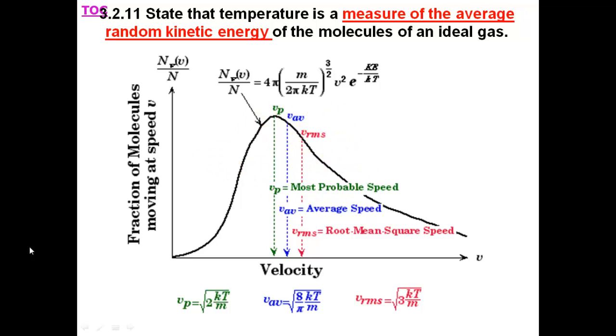So we know that the molecules have a range of kinetic energies. Some have a very high kinetic energy in this part of the graph. Some have a very low kinetic energy in this part of the graph. So there is a spread of different velocities to kinetic energies. The average kinetic energy gives the measure of the temperature.